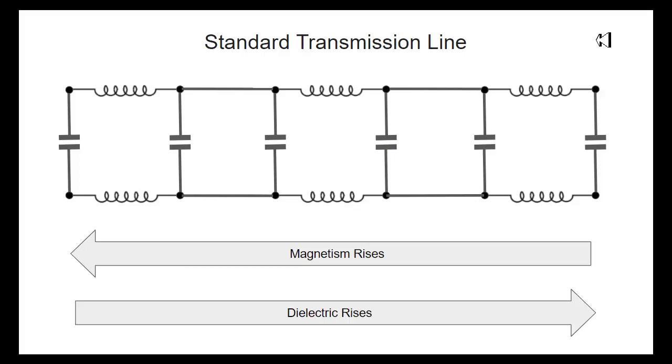So here we can see another manifestation of the principle of incommensurability between magnetism and the dielectric. In the case of the standard transmission line, the magnetism drops off as you go down the line. So the magnetism rises this way, and the dielectric rises this way. So the dielectric strength gets stronger as you go down the line, and the magnetic strength gets weaker as you go down the line.